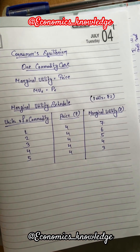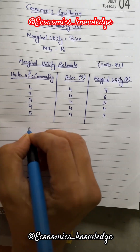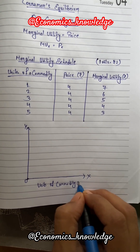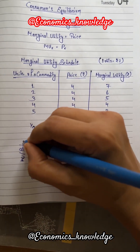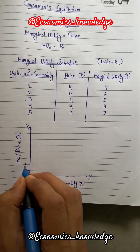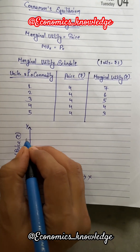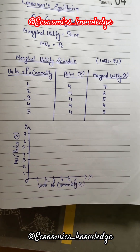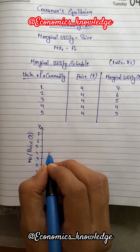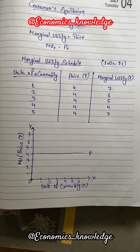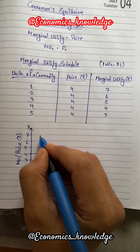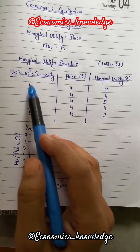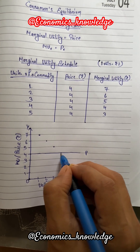So he will buy the first unit because he gets more than what he gives. But there is scope for increasing satisfaction by purchasing more quantity of the good. When we compare the utility received from other units with the price paid, we find that he will buy four units to maximize his satisfaction level.